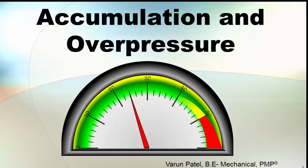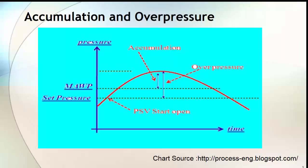Accumulation and Overpressure — these two terms are also related to Pressure Vessel and Pressure Safety Valve. Now check this Pressure vs Time graph for a Pressure Vessel fitted with a Pressure Safety Valve to protect the equipment from blast. The red curve line represents the pressure condition inside the equipment with respect to time. The lower dotted line represents PSV set pressure, which is a little more than operating pressure, and the upper dotted line represents Maximum Allowable Working Pressure.